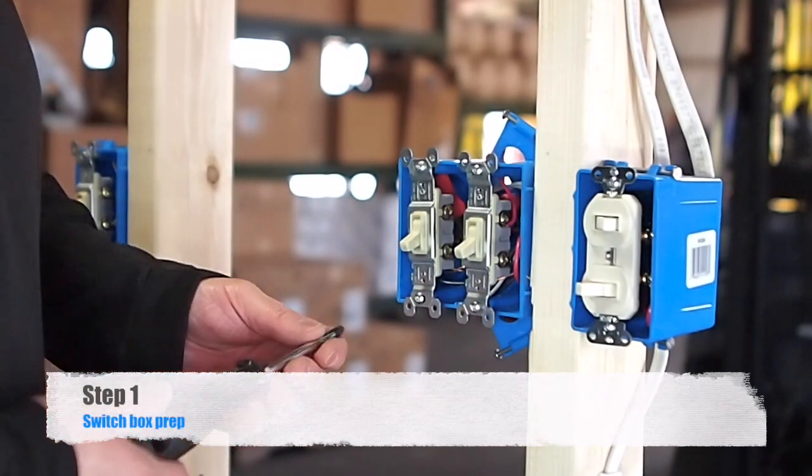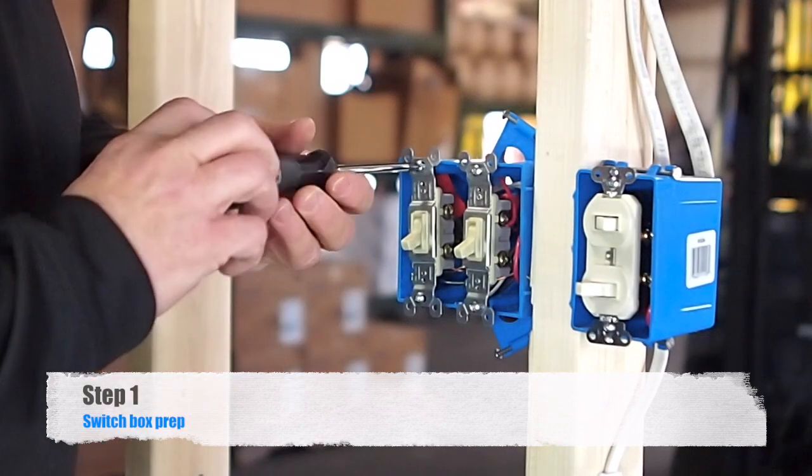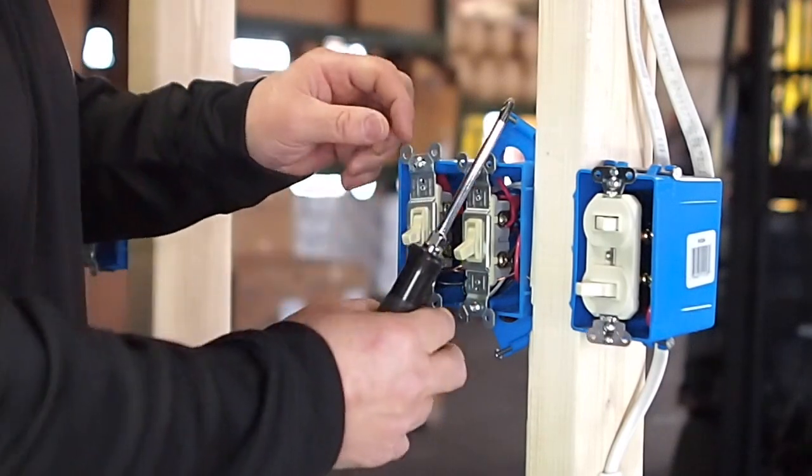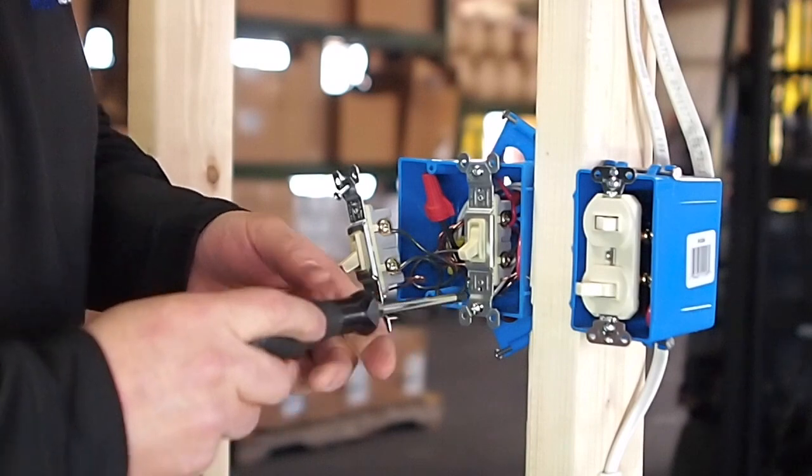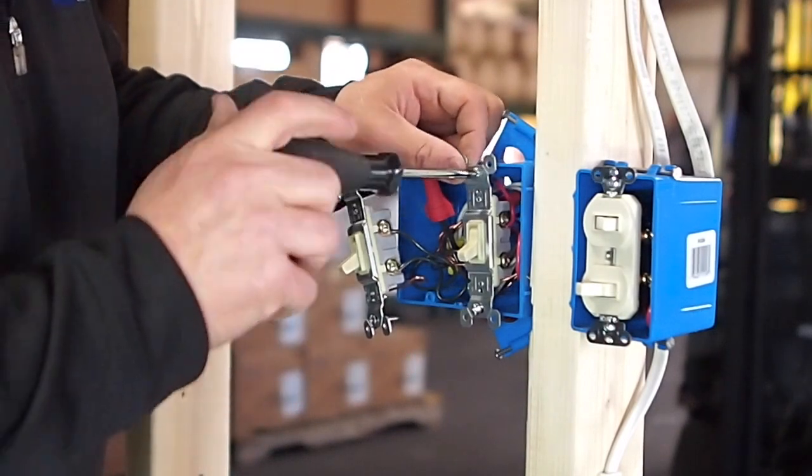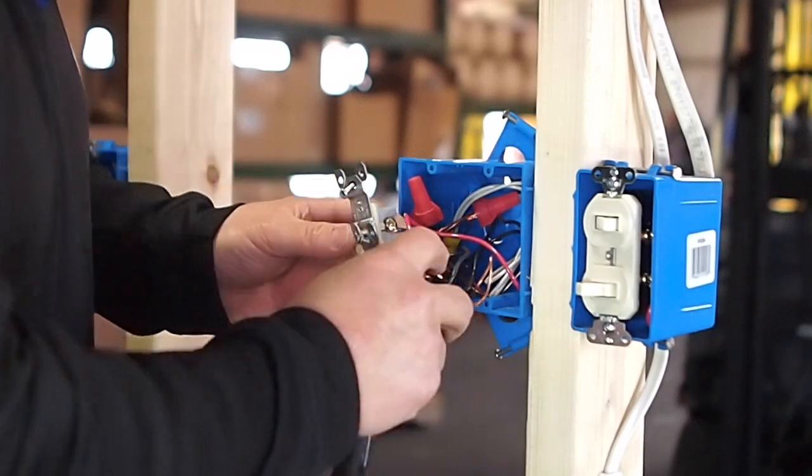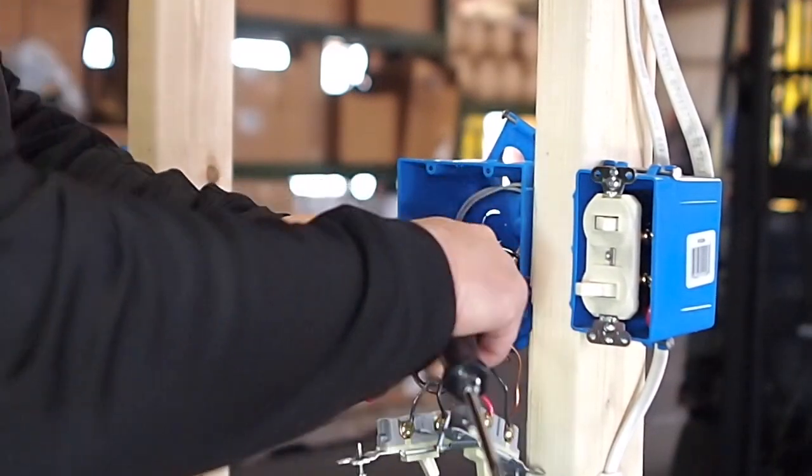We are at the switch box here. We are simply going to unscrew both switches. We are getting ourselves ready to pull our new wire from here up into the attic. We are using the existing wiring here to turn the light on and off, and also take constant power to the fan. The new wire we are going to pull is going to do our spot ventilation.